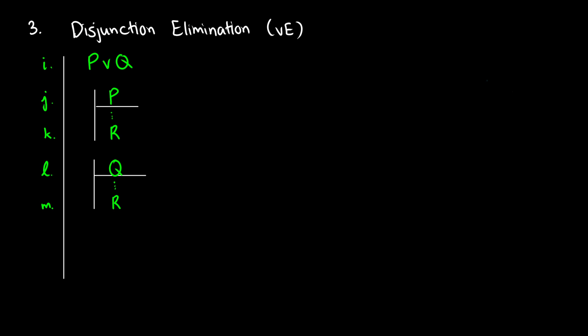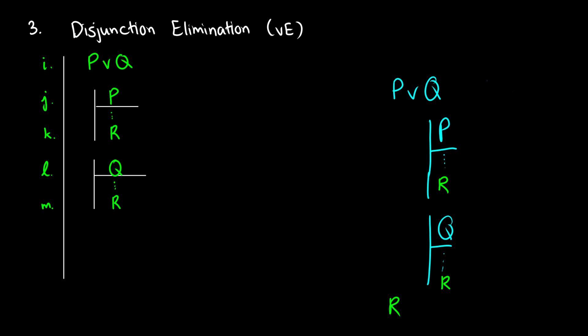The third rule is disjunction elimination — a little bit less intuitive. Imagine we have p or q. We know at least one of those is true. So to get rid of the 'or' sign, we have to think: what if p is true — what do we get? What if q is true — what do we get? If both cases lead to the same result, then whether p is true, q is true, or both are true, we get that final result. We have p or q in an initial line, two sub-proofs — one proof of p→r and one proof of q→r — and because both share the same consequent, in the next line we can write r.